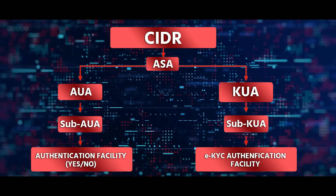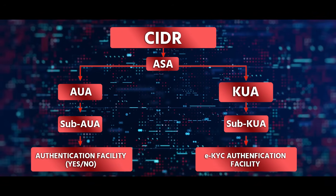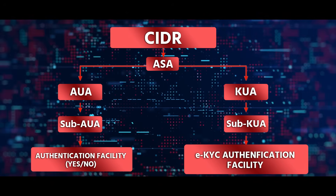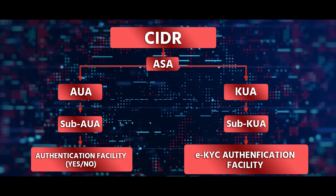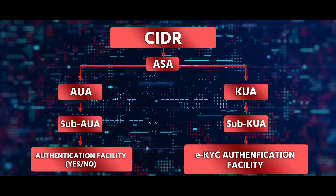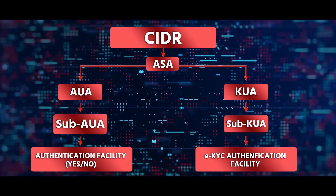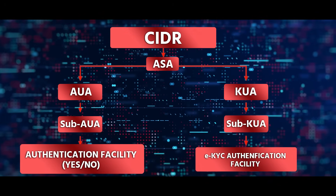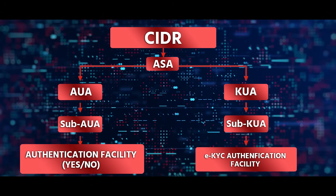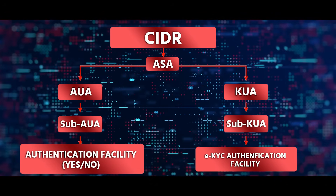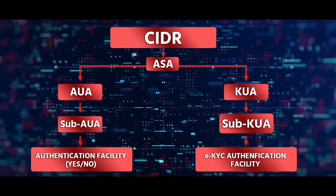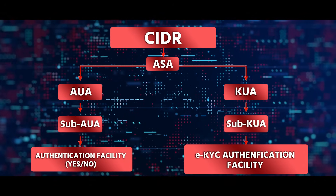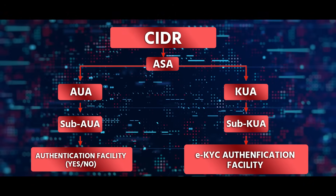KUA, on the other hand, goes a step further by using the eKYC Authentication Facility provided by UIDAI. The role of Sub-AUA is in facilitating Yes or No Authentication through an existing AUA, while Sub-KUA facilitates eKYC authentication through an existing KUA.